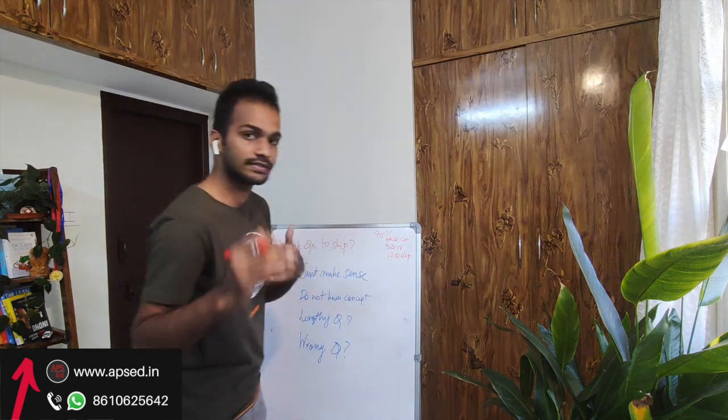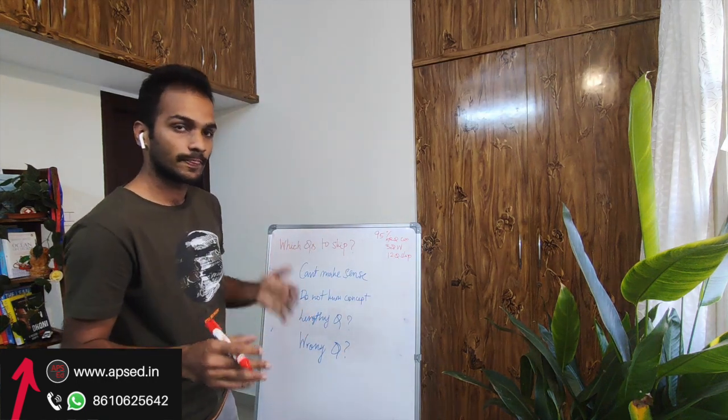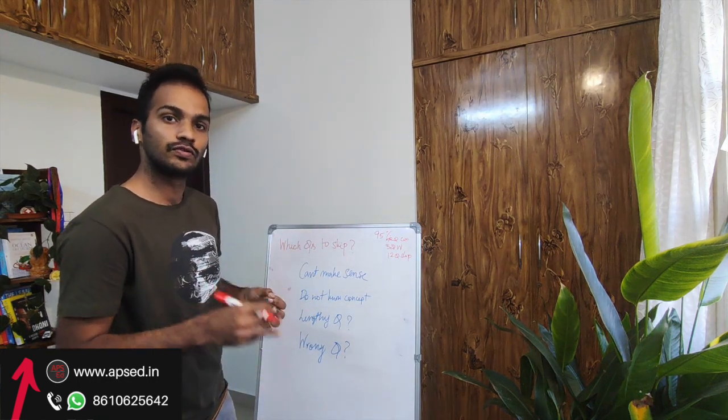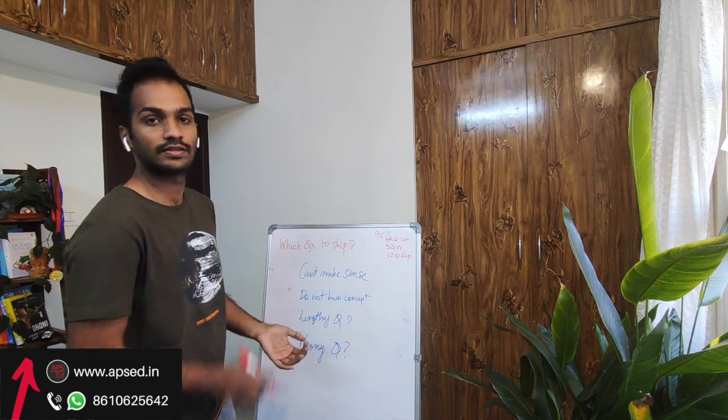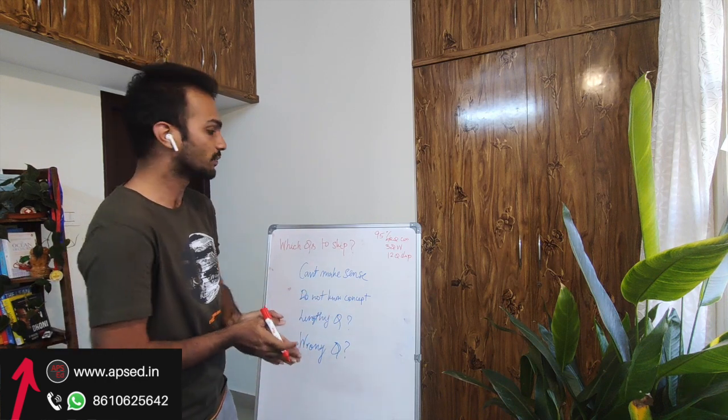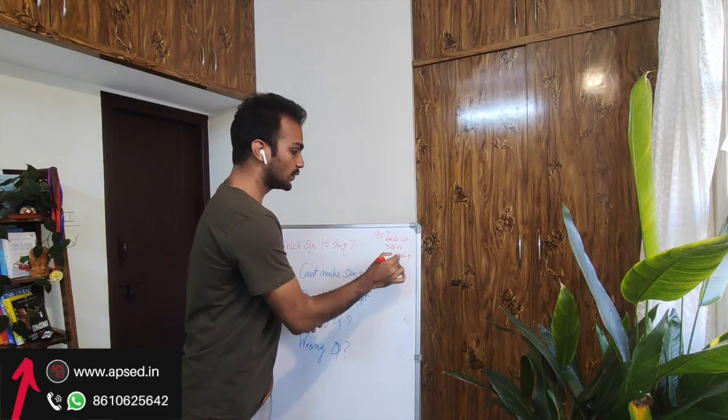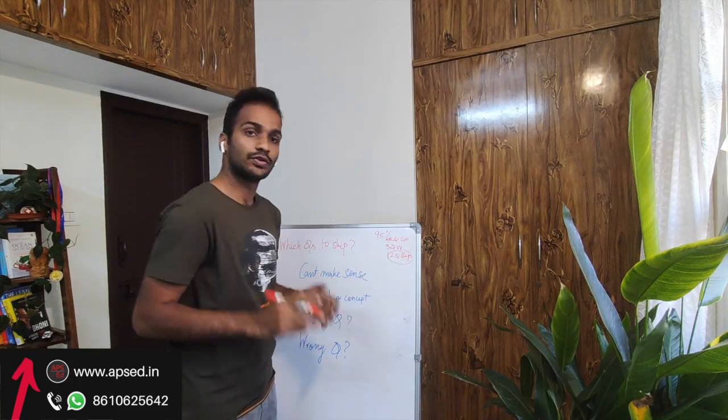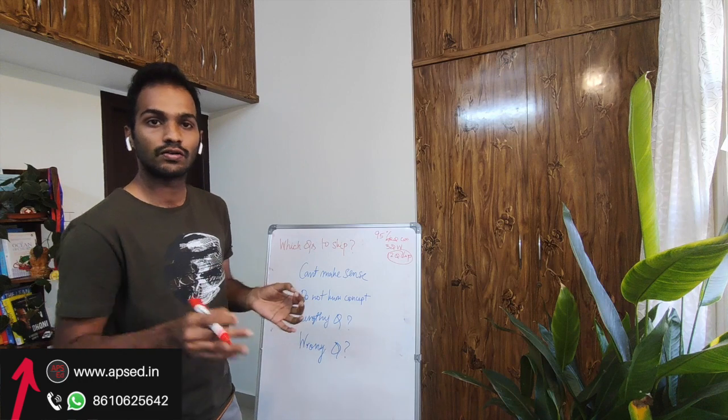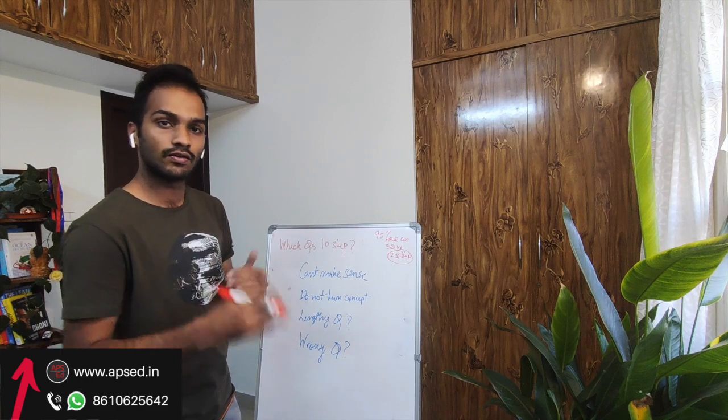So if you do this you will get 75 plus marks and 75 plus marks is good for gate civil, for gate environmental science and probably even for gate geomatics. So you have the liberty to skip 12 questions. So you do not have to panic if you do not know 3-4 questions, you can always skip them.